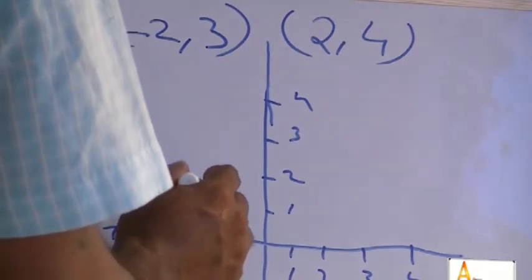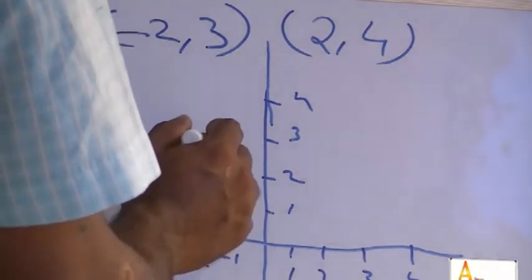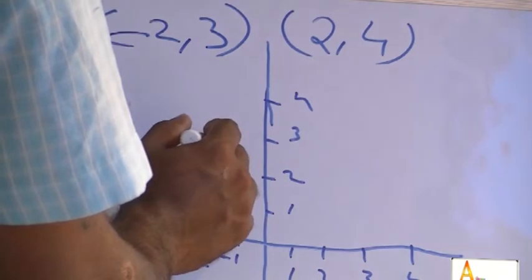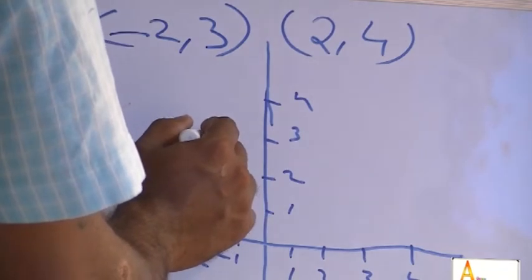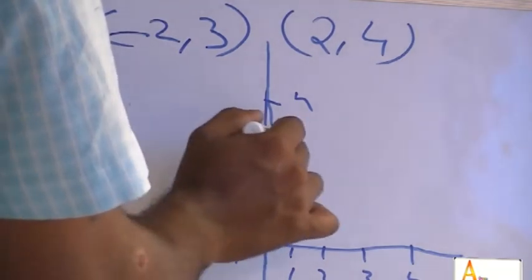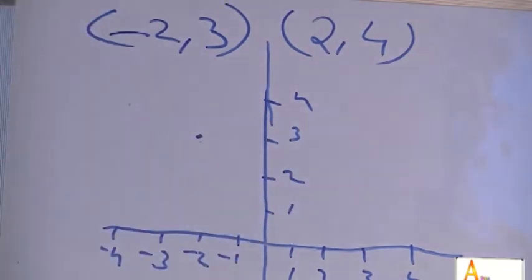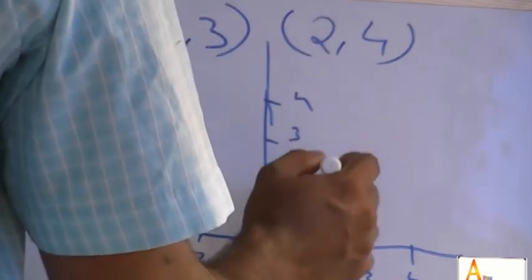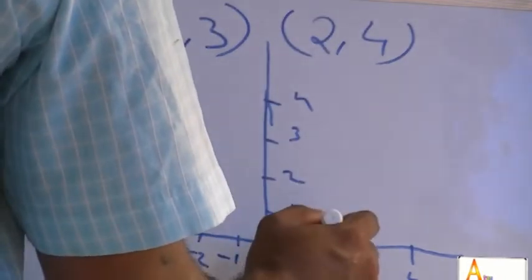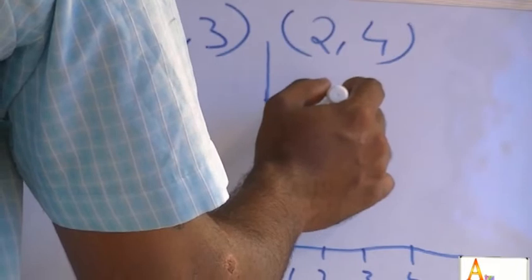We write again once where x minus 2 is 3. x minus 2 is 3. 2, 2 point is zero. x2, y4, x2, 0, 0. y4, 0.